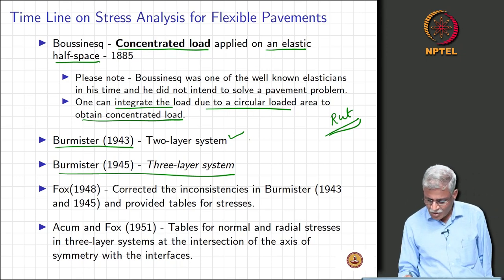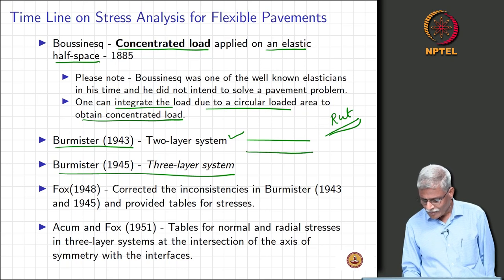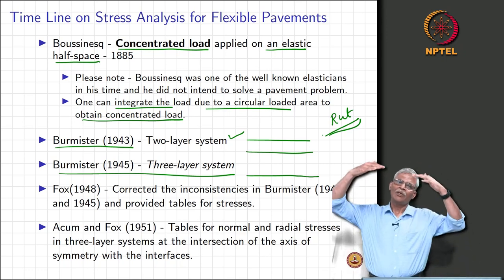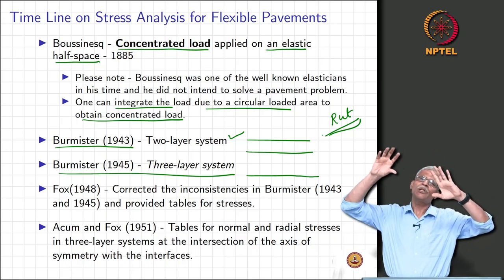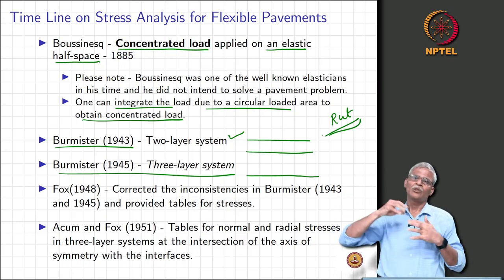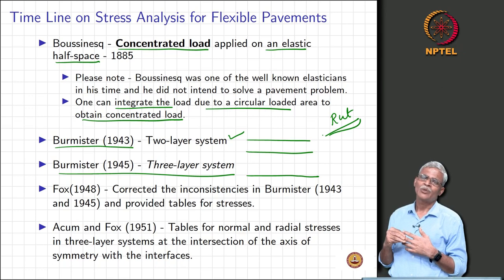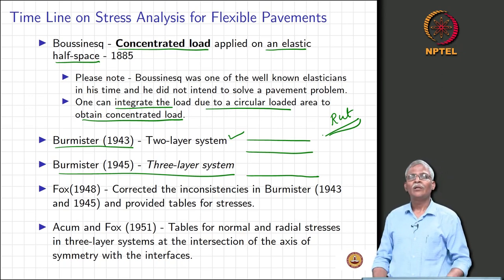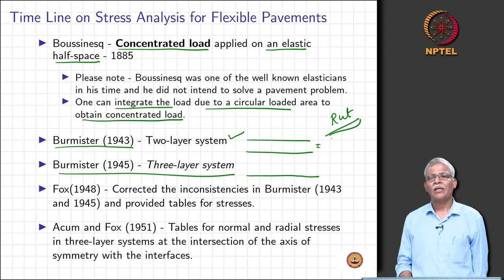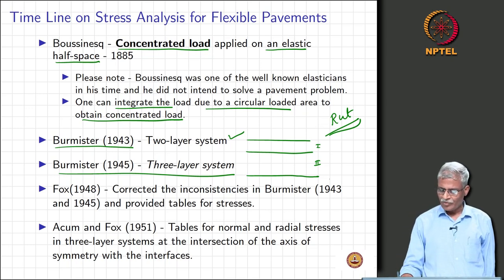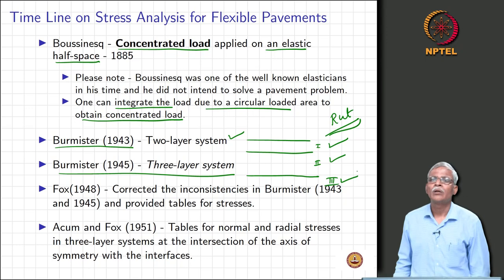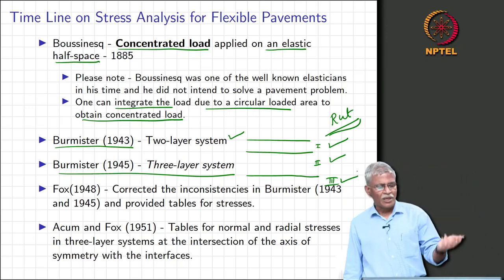Professor Burmister in 1943 solved the two-layer system and later extended it to the three-layer system. If you recollect the IRC cross section, there are one or two layers of bituminous material, then two to three granular layers — base course, sub-base course, and compacted subgrade — then the natural subgrade. Club all bituminous layers into layer 1, all granular layers into layer 2, and the subgrade is layer 3. This is Burmister's 1943–1945 work.